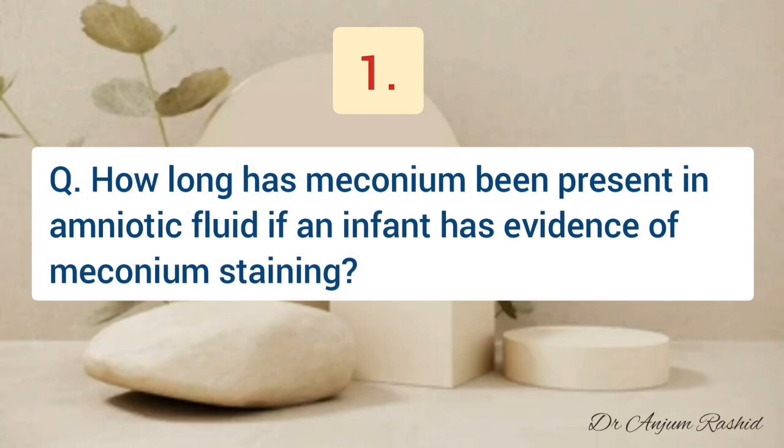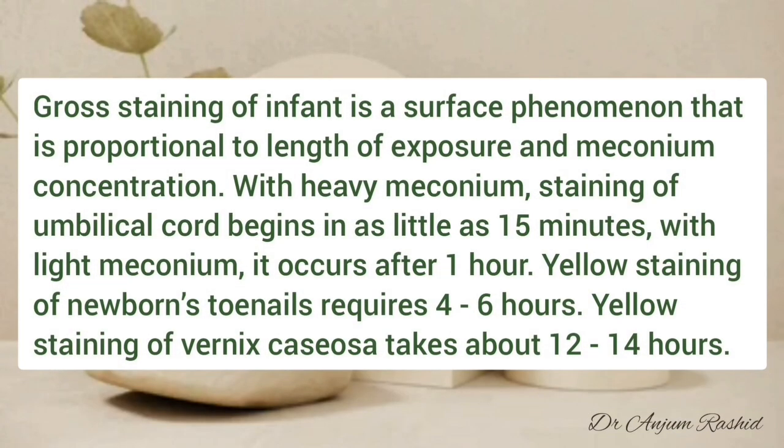Question number one: how long has meconium been present in amniotic fluid if an infant has evidence of meconium staining? Gross staining of the infant is a surface phenomenon proportional to the length of exposure and meconium concentration. With heavy meconium staining, umbilical cord staining begins in as little as 15 minutes, while with light meconium it occurs after one hour. Yellow staining of the newborn's toenails requires about four to six hours.